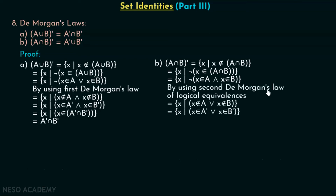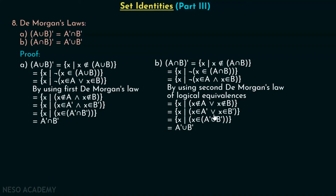By using the second De Morgan's law of logical equivalences, we can say that this is equivalent to: x does not belong to A or x does not belong to B. Here, x does not belong to A can be replaced by x belongs to A complement. Similarly, x does not belong to B can be replaced by x belongs to B complement. And we can write x belongs to A complement union B complement, because this is x belongs to A complement or x belongs to B complement.